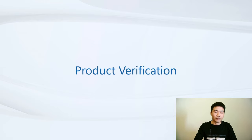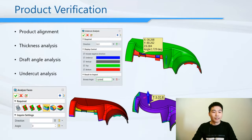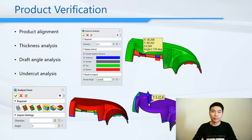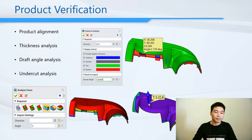Product verification. ZW3D has the product alignment tool to help users correct the product position and direction before mold parting. It also offers analysis tools like thinness, draft angle, and undercut. Let's go directly to the software to see how they work.